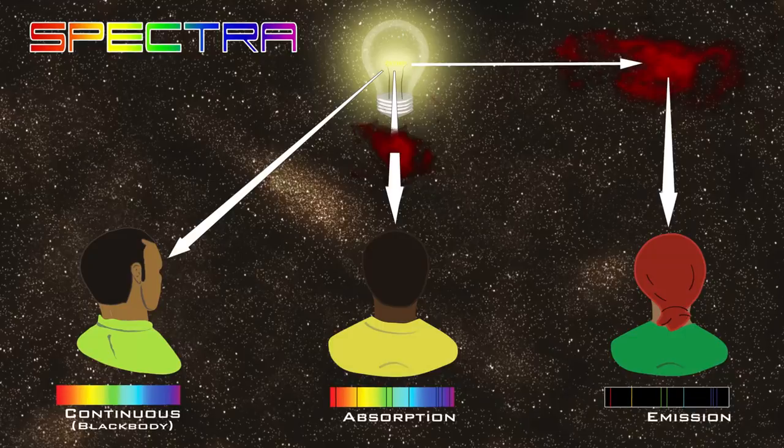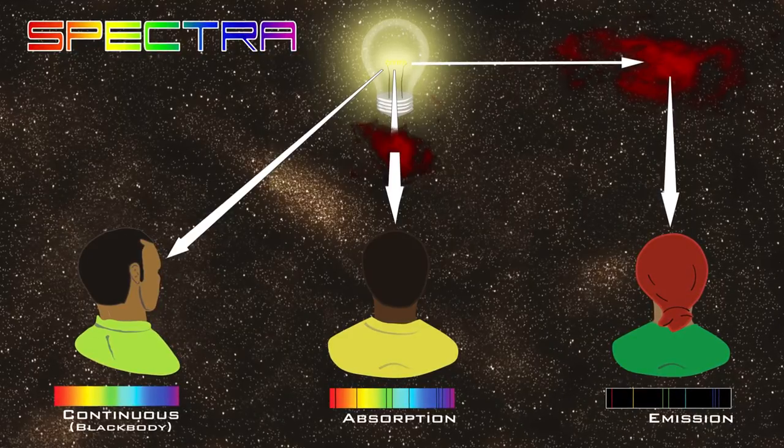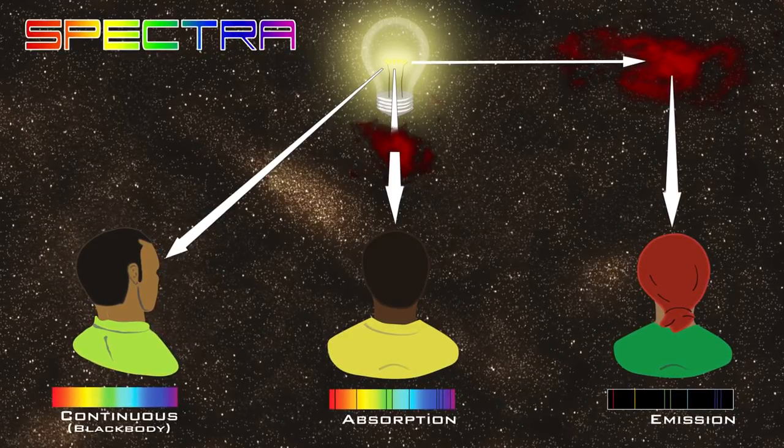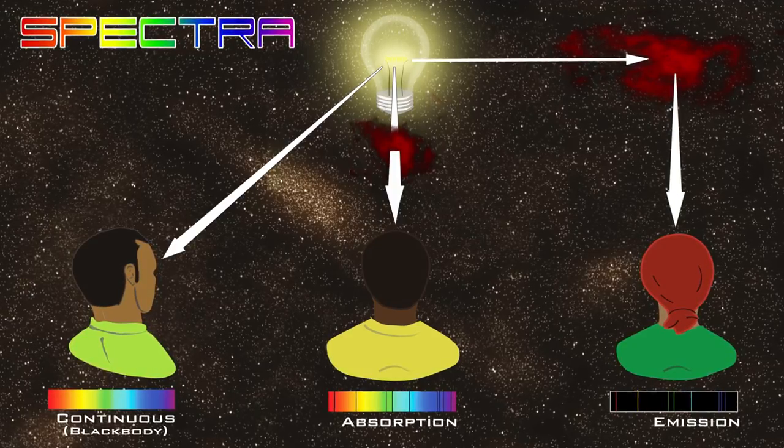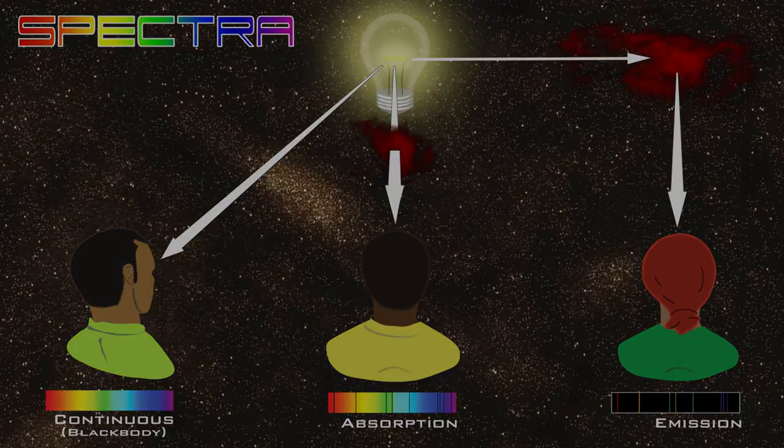Three types of spectra are discussed in introductory astronomy classes: continuous, absorption, and emission. Continuous spectra are often called black body spectra.